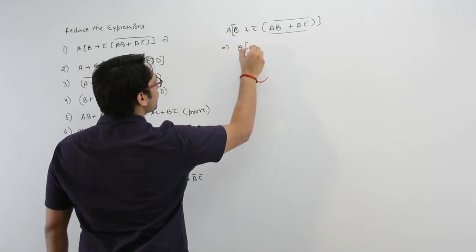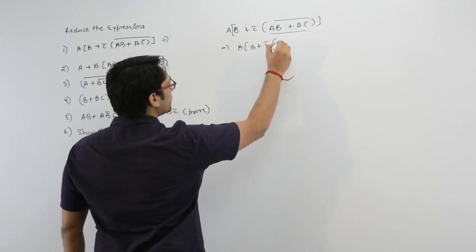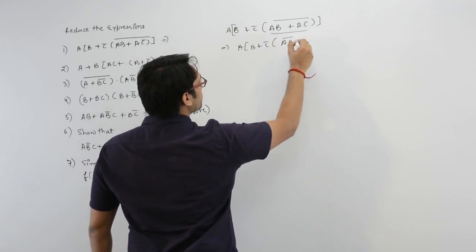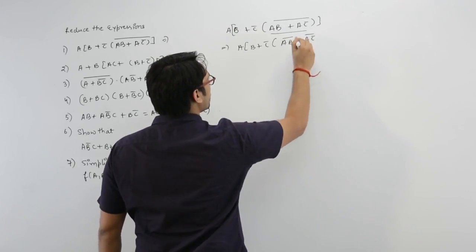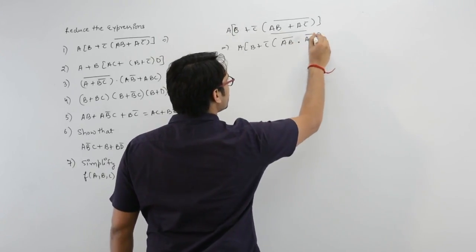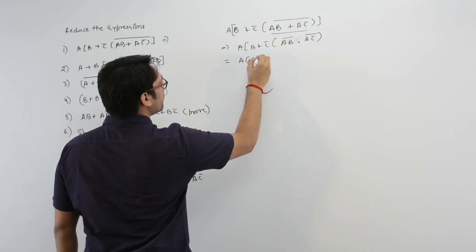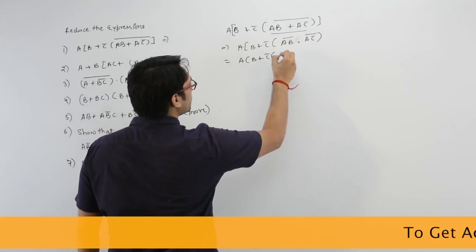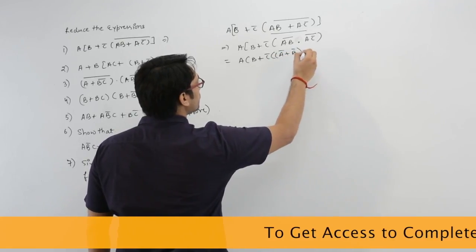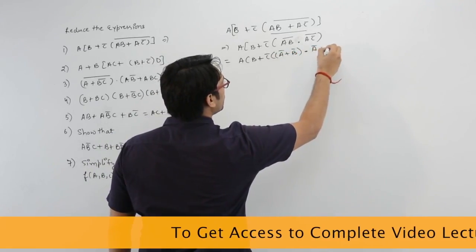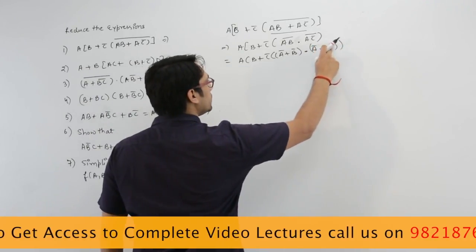So a(b + c)' can be written as (ab)' · (ac')'. This further expands to (a' + b') · (a' + c) using De Morgan's theorem. So it can be written as C only.